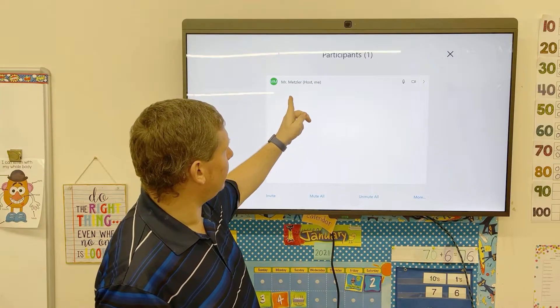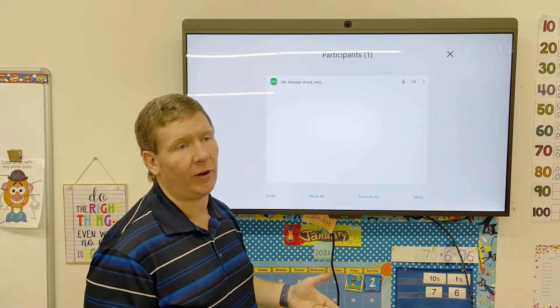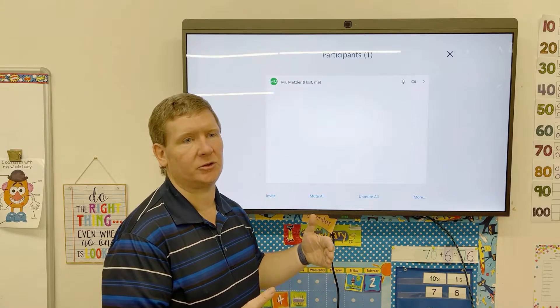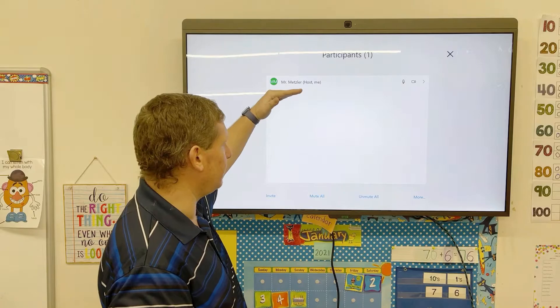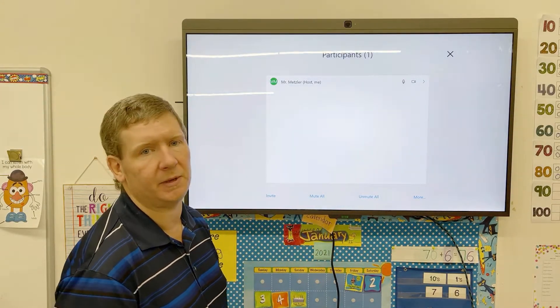And once they join, they'll show up in a list here, and you could admit them. Because if you have the waiting room enabled, you have to make sure that once they join the meeting, they'll need to be actually admitted. And this is where you can do that. You'll see a list of all the people as they join with a little admit button. And once you tap that, they're in the meeting and ready to go.